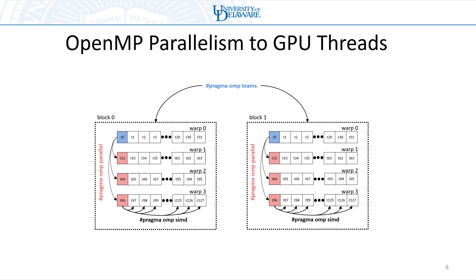OpenMP has concepts for mapping the different threads within a thread block to OpenMP concepts. Each thread block would be one OpenMP Team. Threads within the same thread block are marked as parallel, and then threads within the same warp would be SIMD. So we have this breakdown of how we're mapping GPU threads into OpenMP concepts.